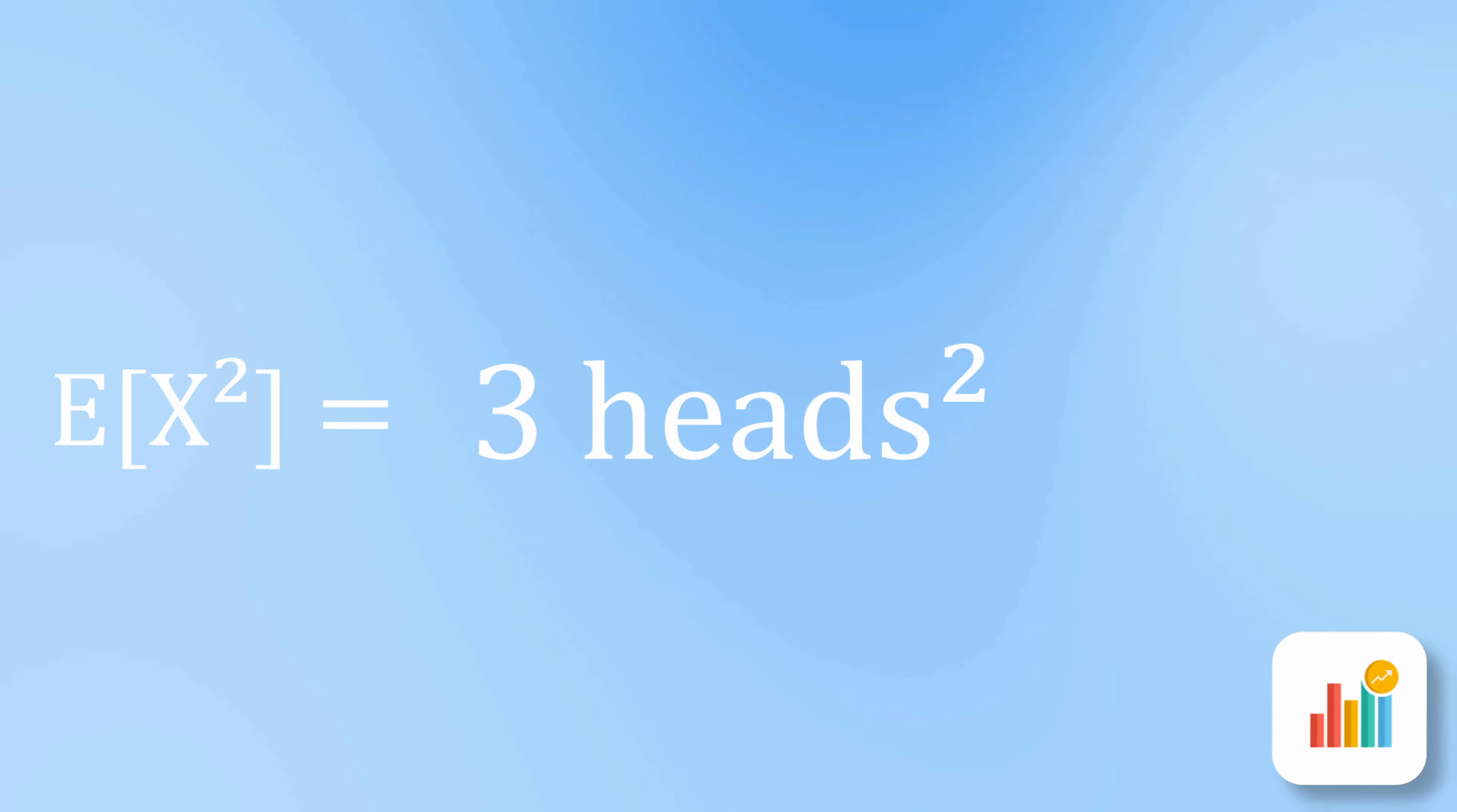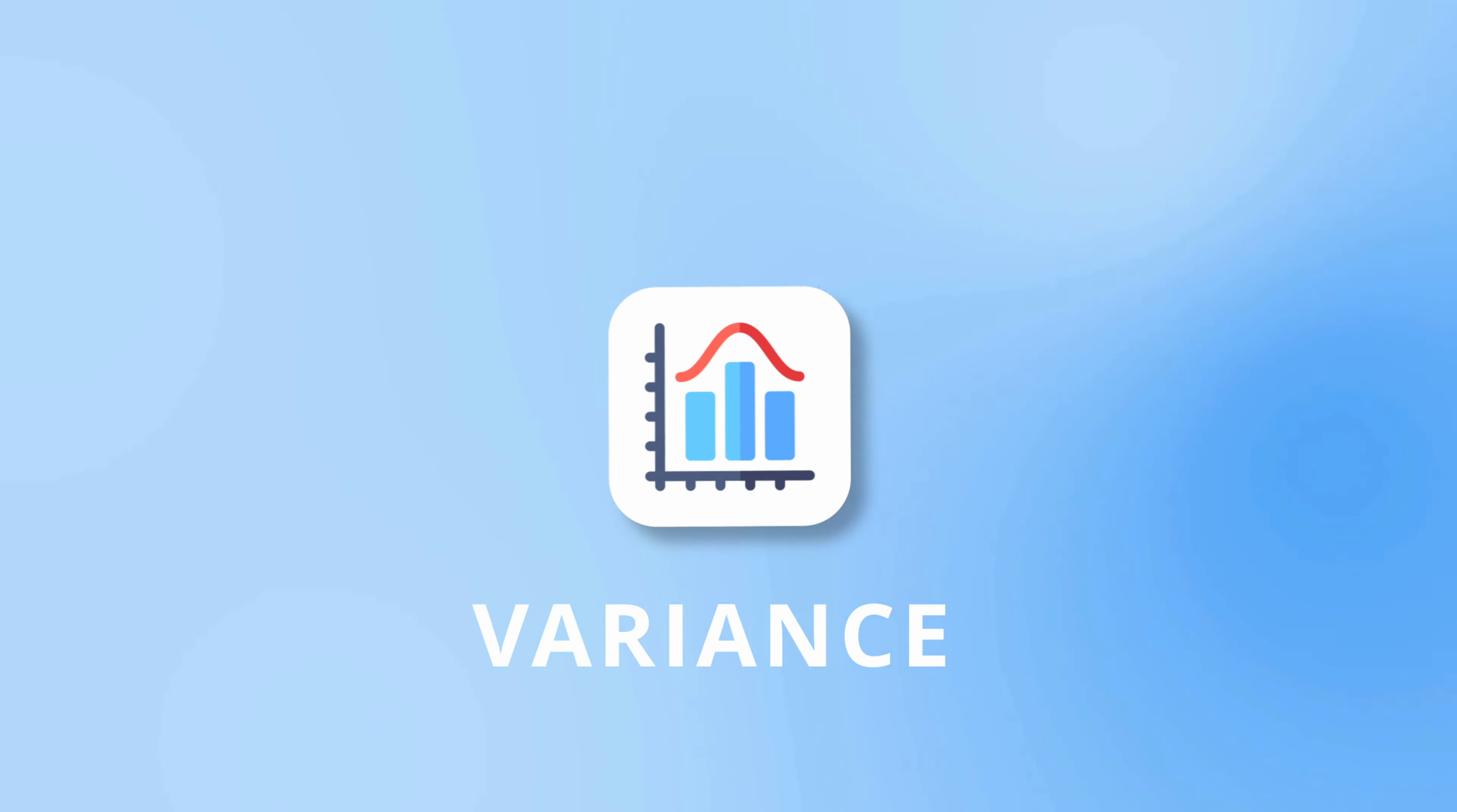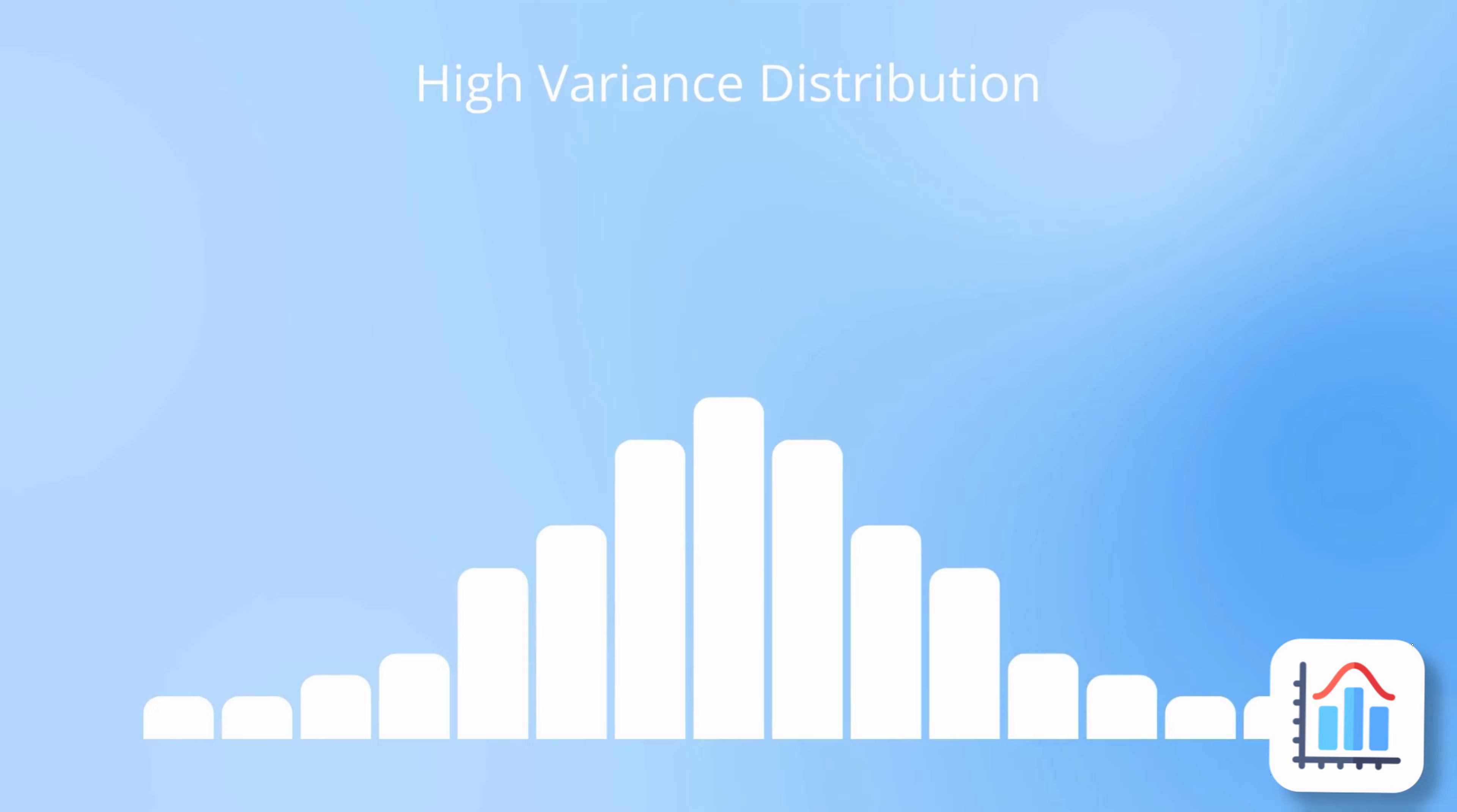This function is also known as the second raw moment of x, and to generalize, the nth raw moment of x is denoted by E of x to the n. The reason we explain the second raw moment is because we can use it to calculate the second central moment, also known as the variance. The variance is defined as the expected value of the squared deviation of x from its mean. So if the outcomes of your experiment are concentrated around the mean, then you're typically going to have a lower variance. And the more spread out the outcomes are from the mean, the higher the variance.